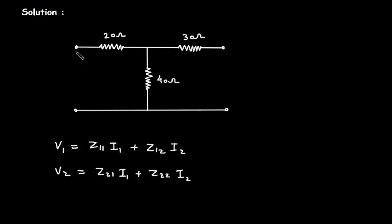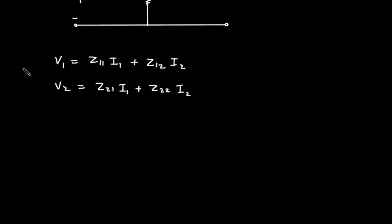Now here in this network, this will be input voltage V1 and this will be input current I1, and here this will be output current I2 and this will be output voltage V2. To find the z-parameters z11, z12, z21, and z22 — these are the coefficients of I1 and I2, and these are the z-parameters.